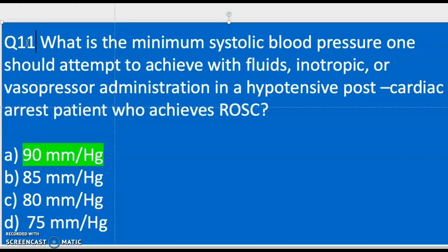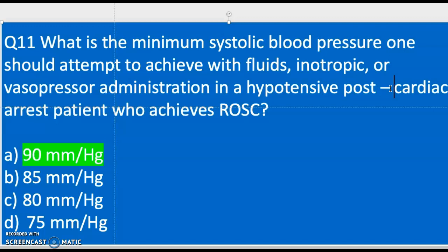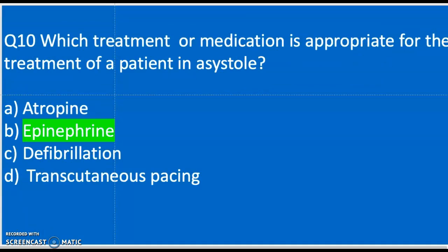Question eleven: What is the minimum systolic blood pressure one should attempt to achieve with fluids, inotropes, or vasopressors in a hypotensive post-cardiac arrest patient? A) 90 mmHg, B) 85 mmHg, C) 80 mmHg, D) 75 mmHg. Being hypotensive means your blood pressure is dropping — possibly cardiogenic shock or fluid volume deficit. The correct answer is A — 90 millimeters of mercury.